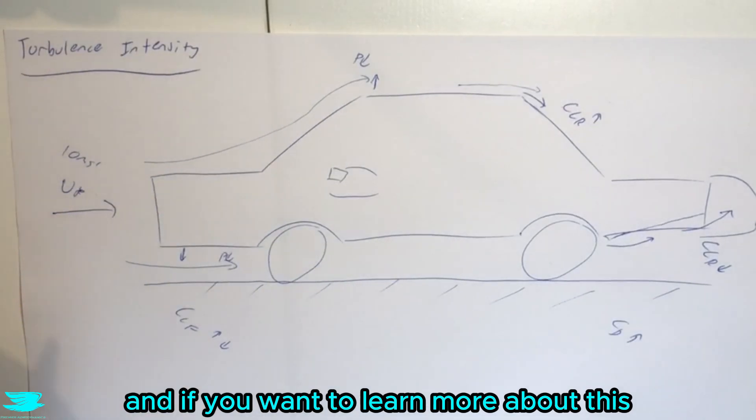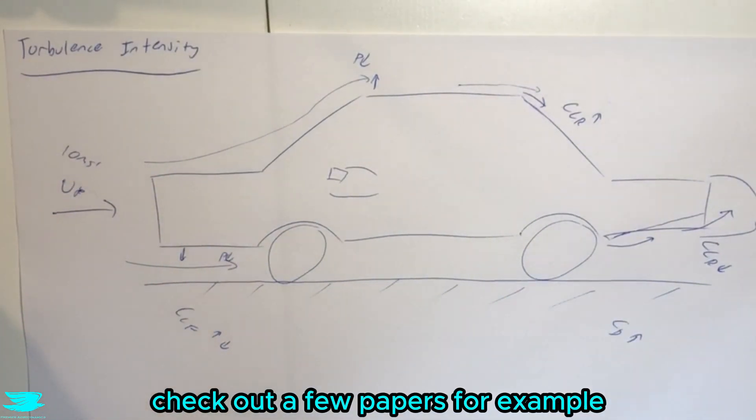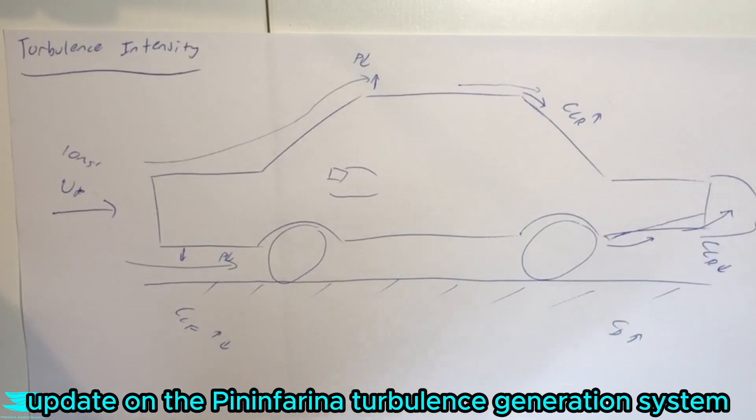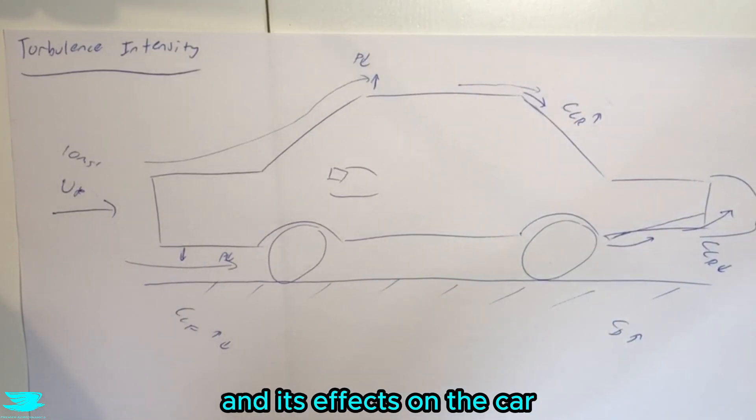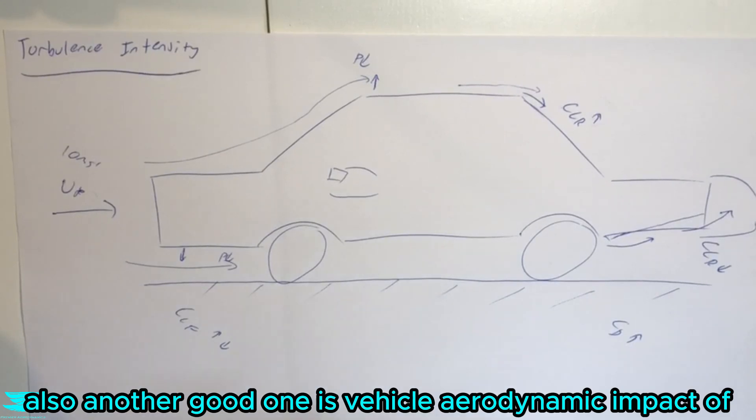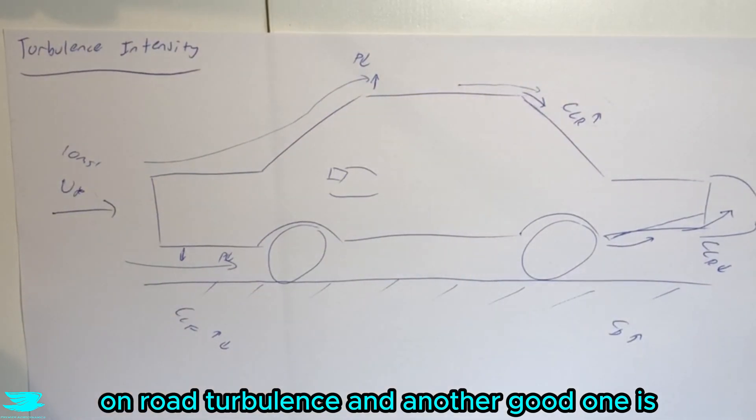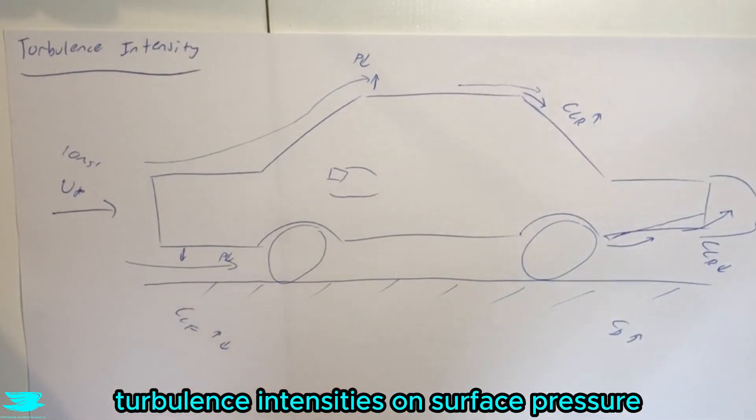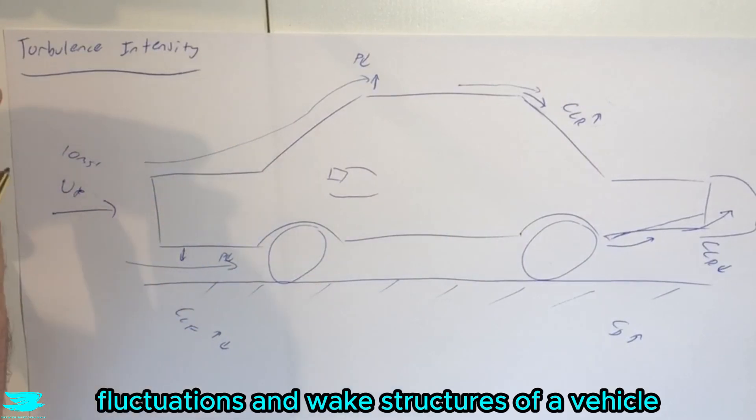And if you want to learn more about this, check out a few papers, for example, update on the Pininfarina turbulence generation system, and its effects on the car aerodynamics and aeroacoustics. Also, another good one is vehicle aerodynamic impact of on-road turbulence. And another good one is the effect of high turbulence intensities on surface pressure fluctuations and wake structures of a vehicle model.